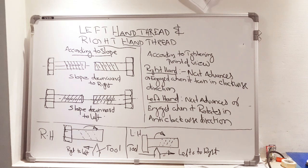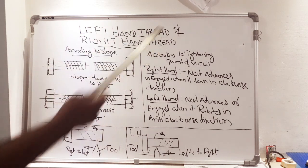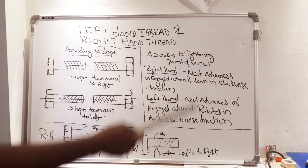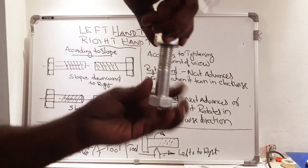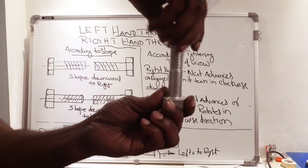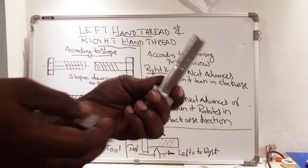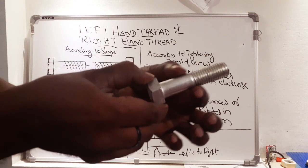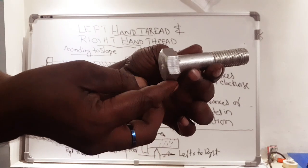Dear students, in this video we have to discuss what you mean by left-hand thread and right-hand thread. Before going into details, first let's see this component having a threaded portion — a cylindrical part with external thread. Such a device is called a bolt.